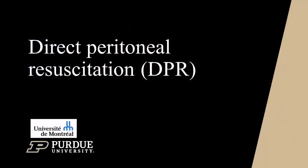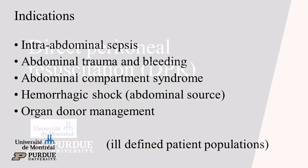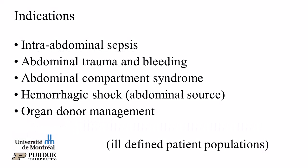Direct peritoneal resuscitation is described in humans to treat ischemia-reperfusion injury in the intestines, improve visceral blood flow, and blunt aberrant immune responses resulting from abdominal injury or shock. It was first used for human abdominal trauma patients having damage control surgery with an open abdomen.